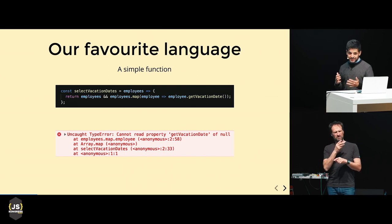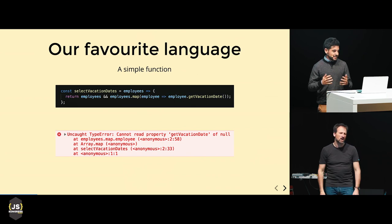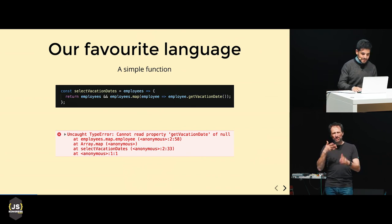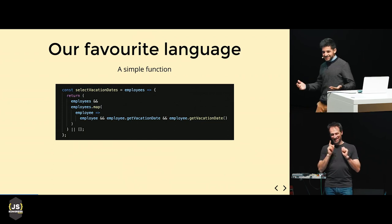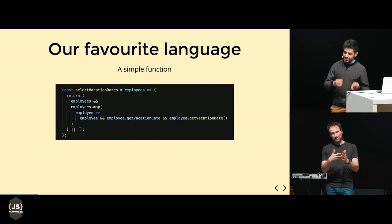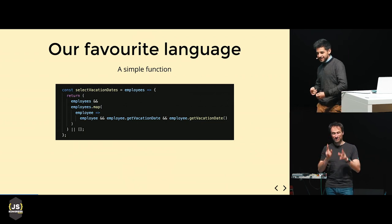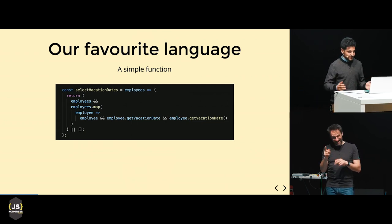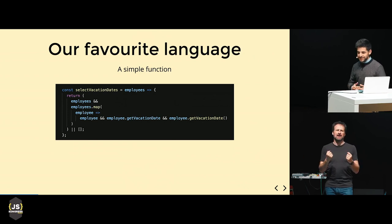At this point, I'm pretty tired of this, so I got basically every check I can. Our function checks if employees is defined, checks that each employee is defined and has this method, and only then we call it. And just in case, if everything fails, we return an empty array.